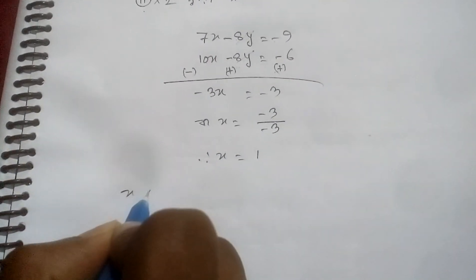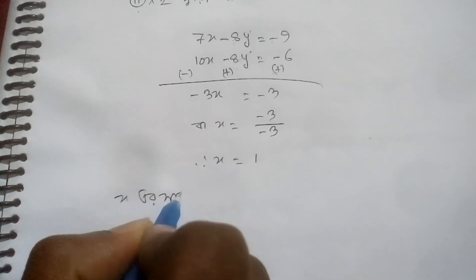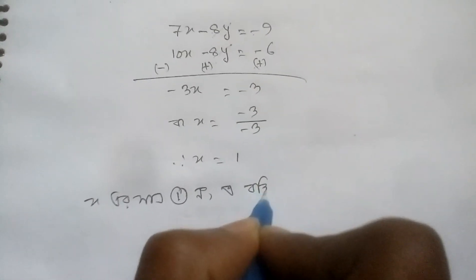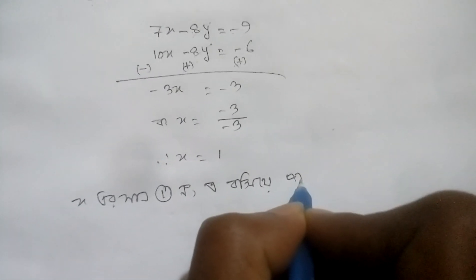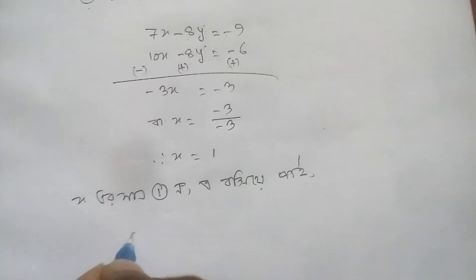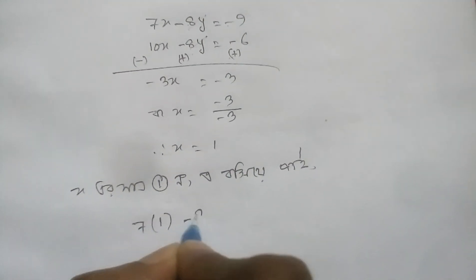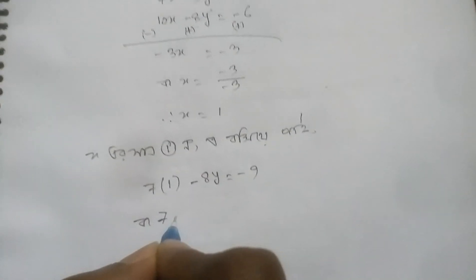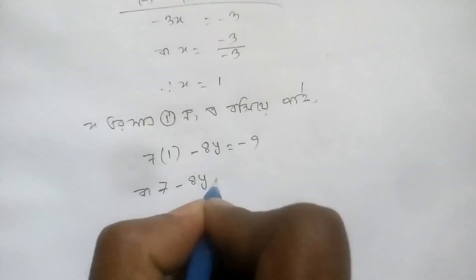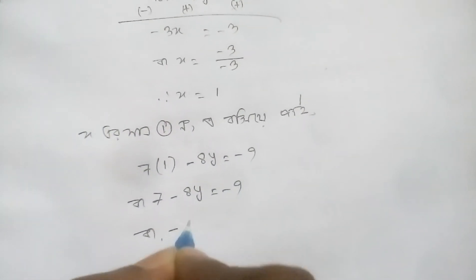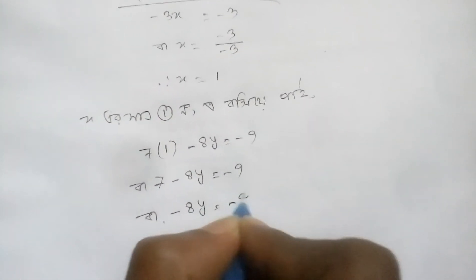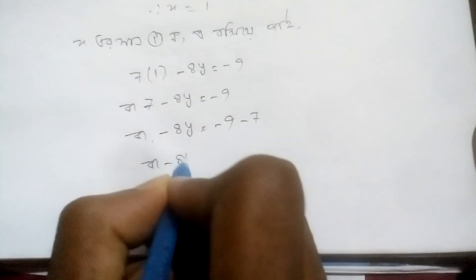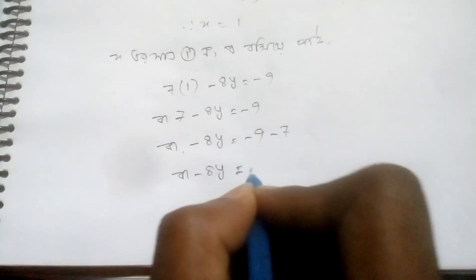Then x here is 1. The 7x here minus one, minus 8y equal to minus 9. This shot is a shot: minus 8y equal to minus 9. I am going to say y to the other one, so y will have a negative meaning equal to minus 9 plus 7.